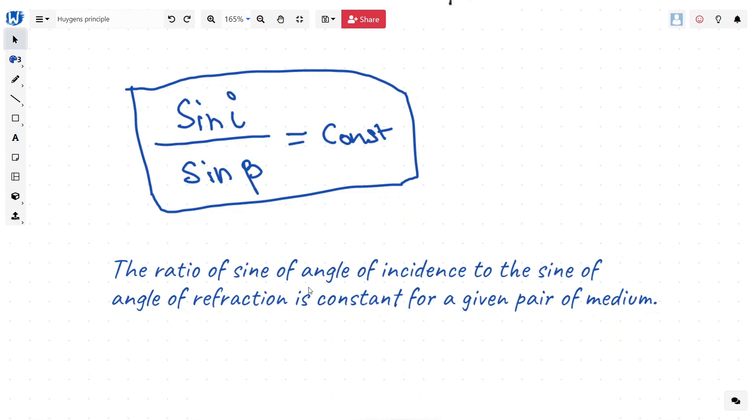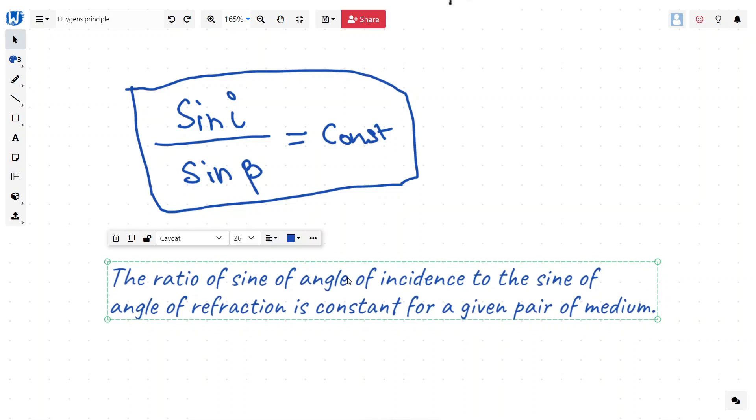Snell observed this law through experiment but couldn't provide any theoretical explanation on how this works. Snell's law was basically an experimental law and many people tried to explain this phenomena using some theory.